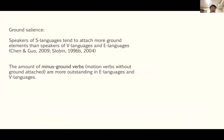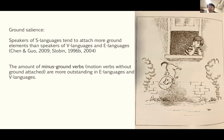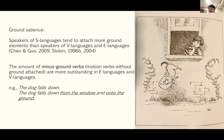For ground salience, speakers of S-languages tend to attach more ground elements than speakers of V-languages and E-languages. The proportion of minus-ground motion verbs — motion verbs without a ground element attached — is higher in E-languages and V-languages. For example, describing a dog falling from a window onto the ground involves selecting whether to include source and destination ground information.